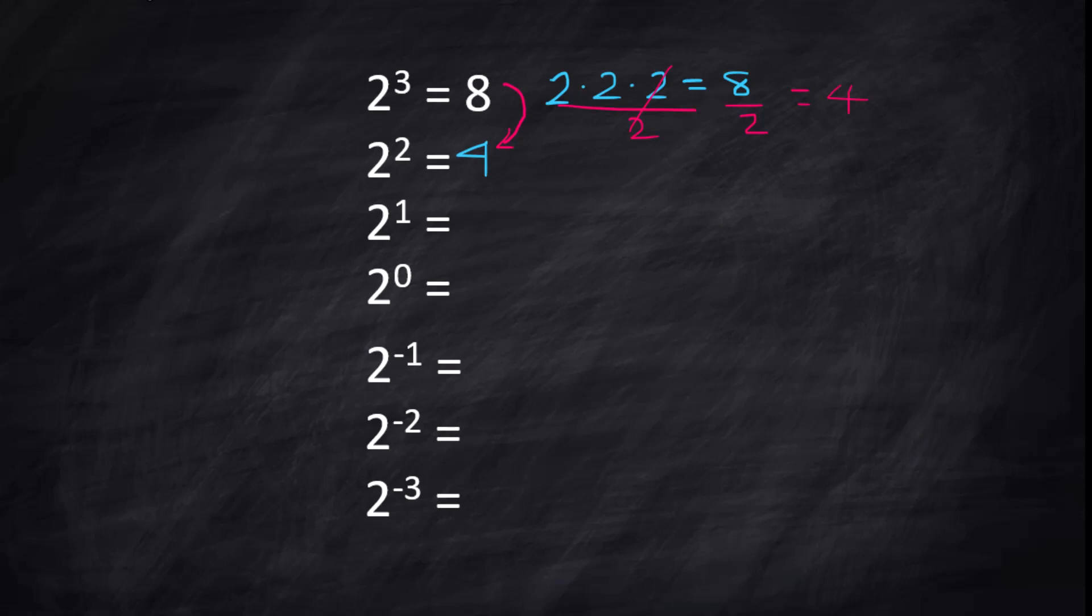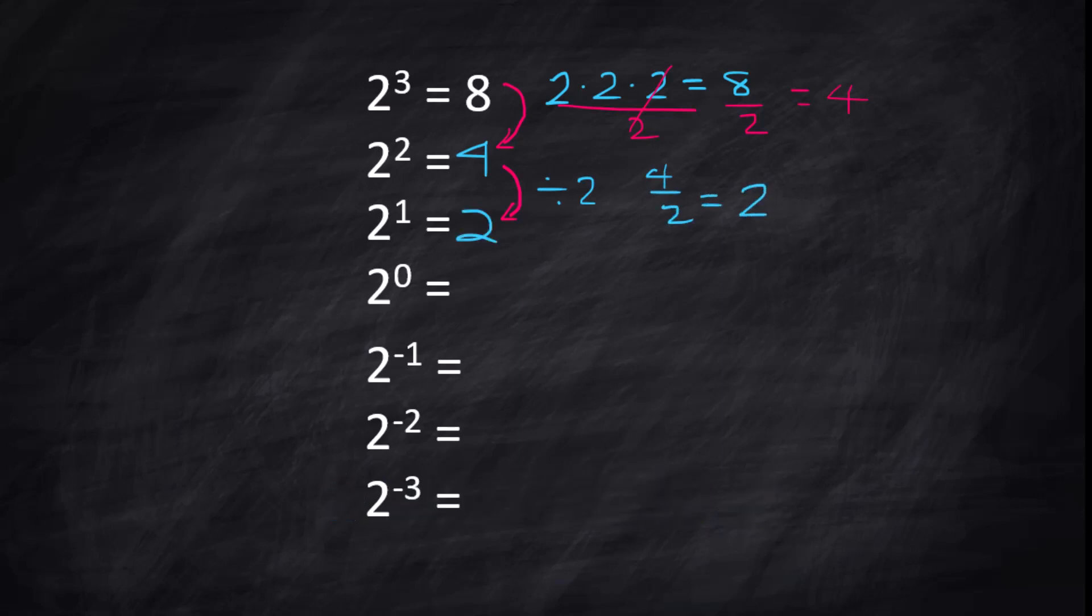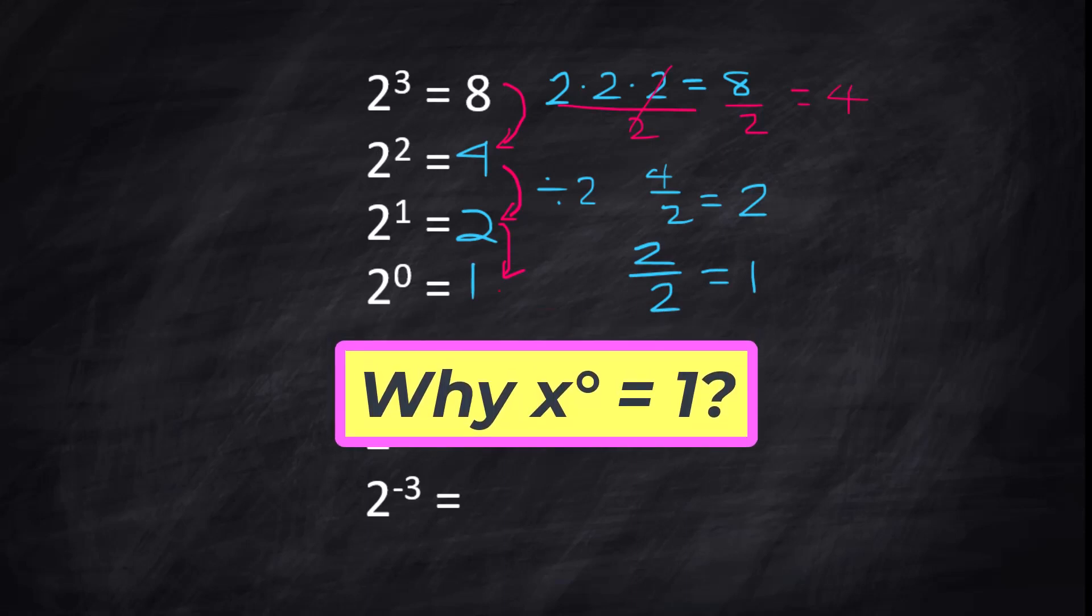You're not subtracting, you are dividing. When you go up in exponents, you are multiplying. So to go from 4 to the next answer, you would divide by 2, and 4 divided by 2 is 2. And now to go down to the 0 exponent, you're going to follow the same pattern. Take 2 and divide it by 2, and that gives us 1. And that might answer a question for you too.